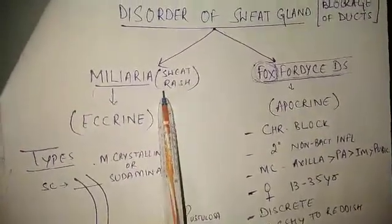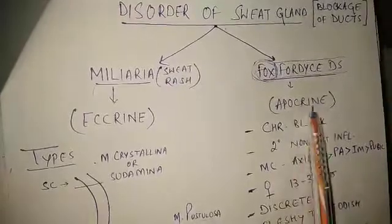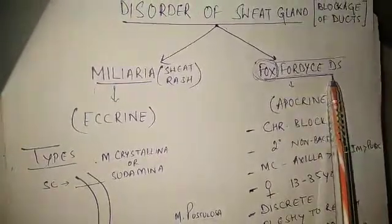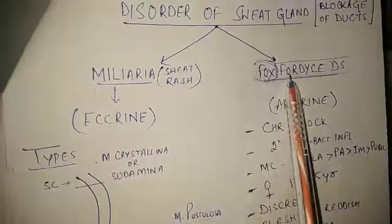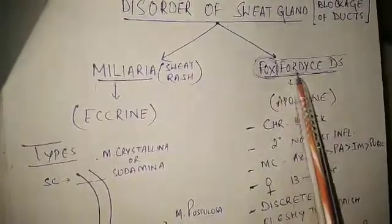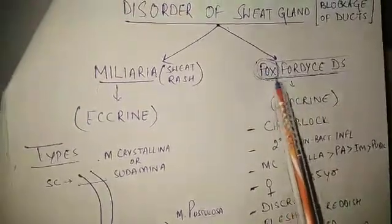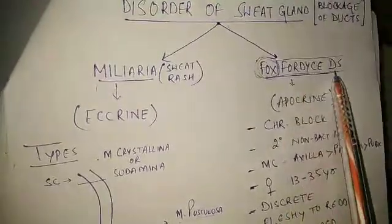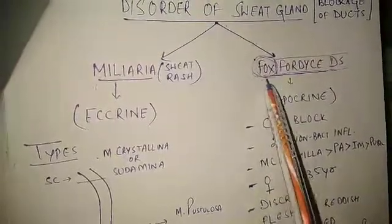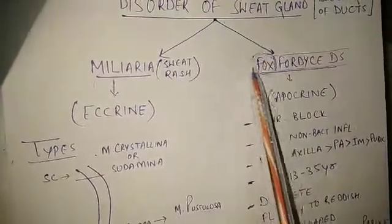When the ducts of the apocrine sweat glands get blocked, we call it Fox-Fordyce disease. You should be able to distinguish Fox-Fordyce disease from Fordyce disease. Fordyce disease is a disorder of the sebaceous gland, while Fox-Fordyce disease is a disorder of the sweat gland. I will give you a trick to remember it — focus on the word 'fox.'